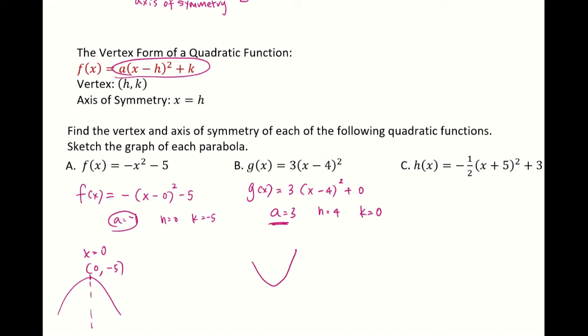Your h is 4, k is 0, so your vertex is (4, 0) and the axis of symmetry is x equals 4. It's a vertical line.